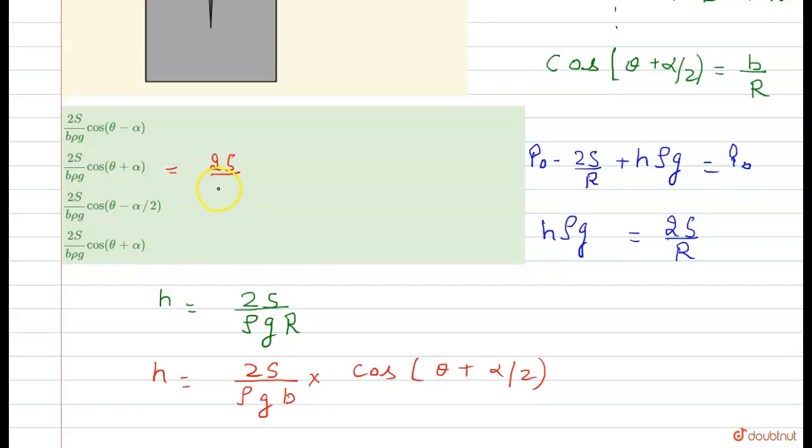Now this is equals to 2s by rho g b into cos(theta plus alpha by 2). This is the final answer, thank you.